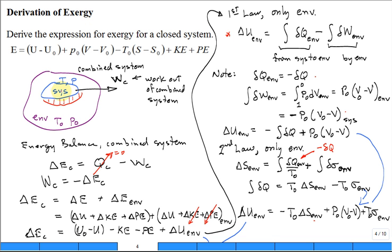This system can do some work, as shown in red, pushing back the environment — that's a non-useful work. We really need the work that's out of the combined system, not just pushing back the environment, but out of the system and the environment together. So we're interested in calculating W_SFC. We'll apply first and second law balances for different components, starting with the energy balance for the combined system.